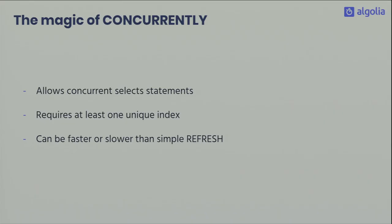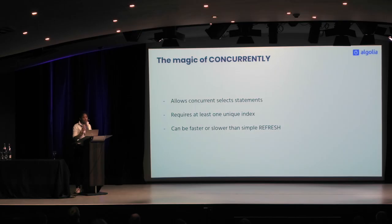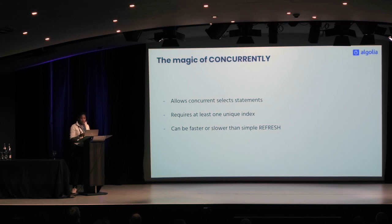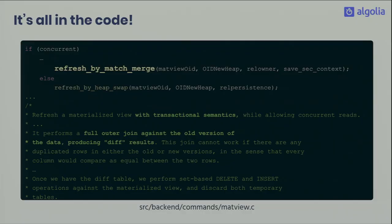PostgreSQL covers this with REFRESH CONCURRENTLY. The concurrently option allows concurrent selects, so the user can still access the dashboard during refresh. The only constraint is that you need a unique index on the materialized view — which our data model allowed. It can be either slower or faster than a normal refresh depending on the situation.